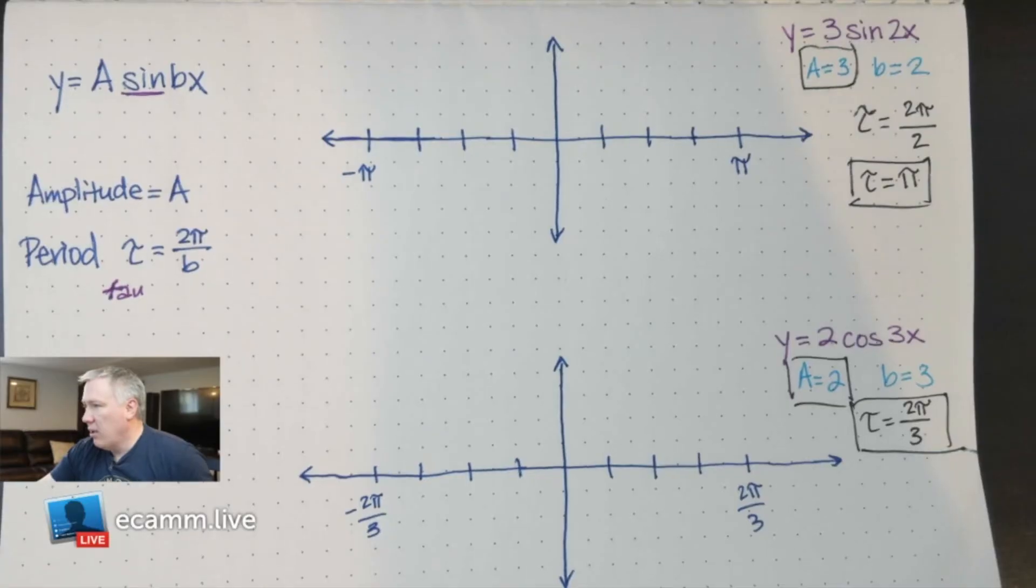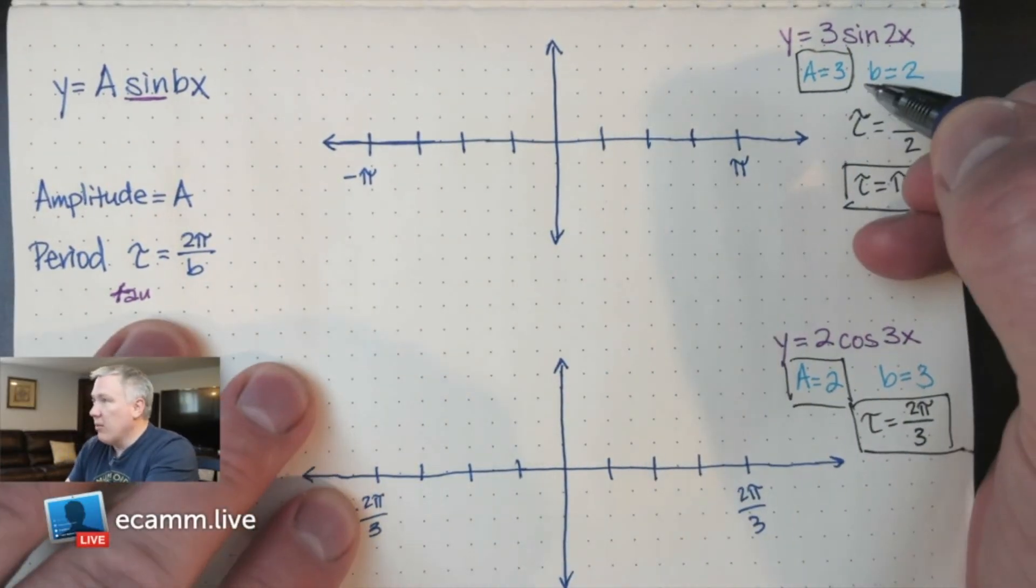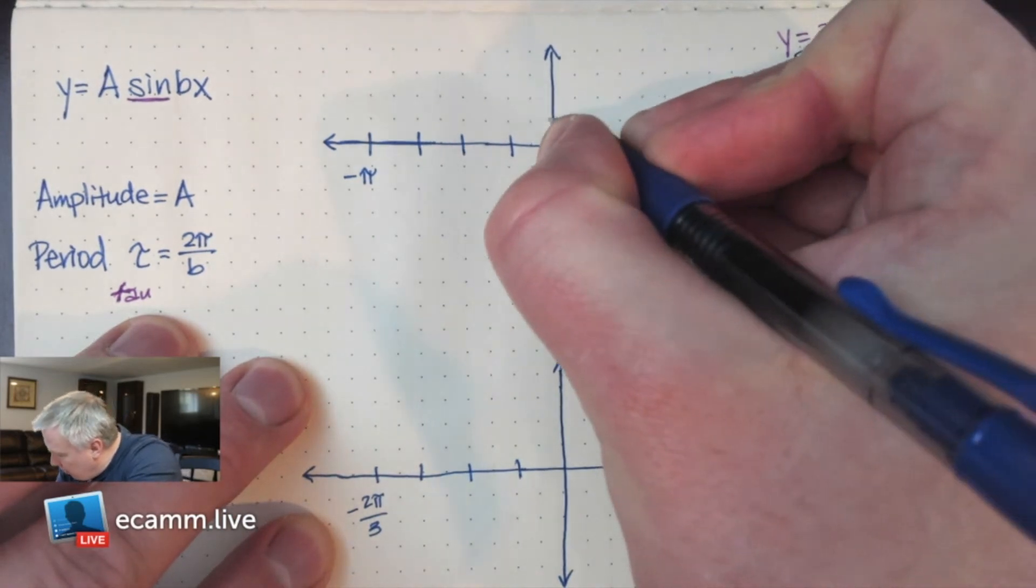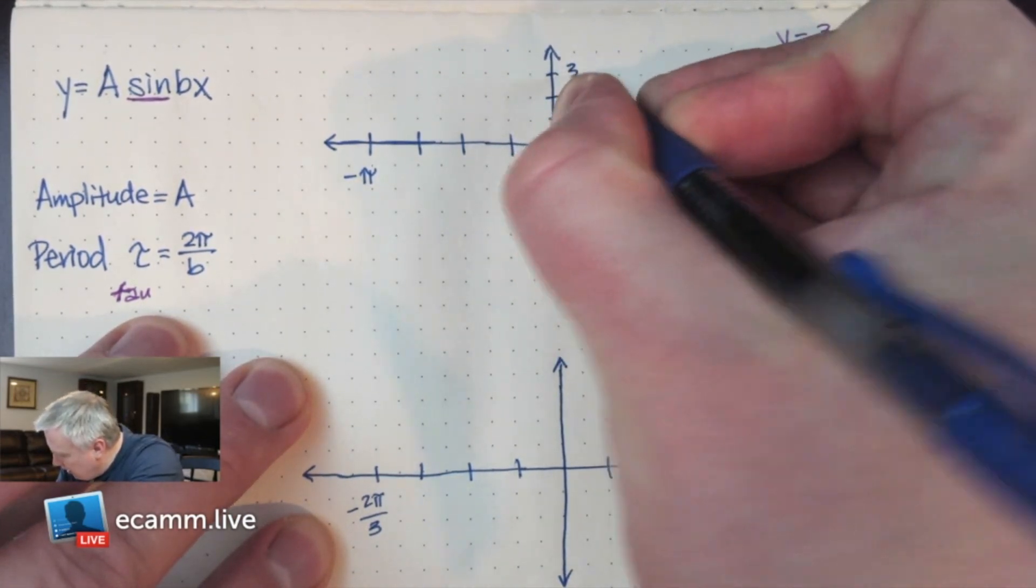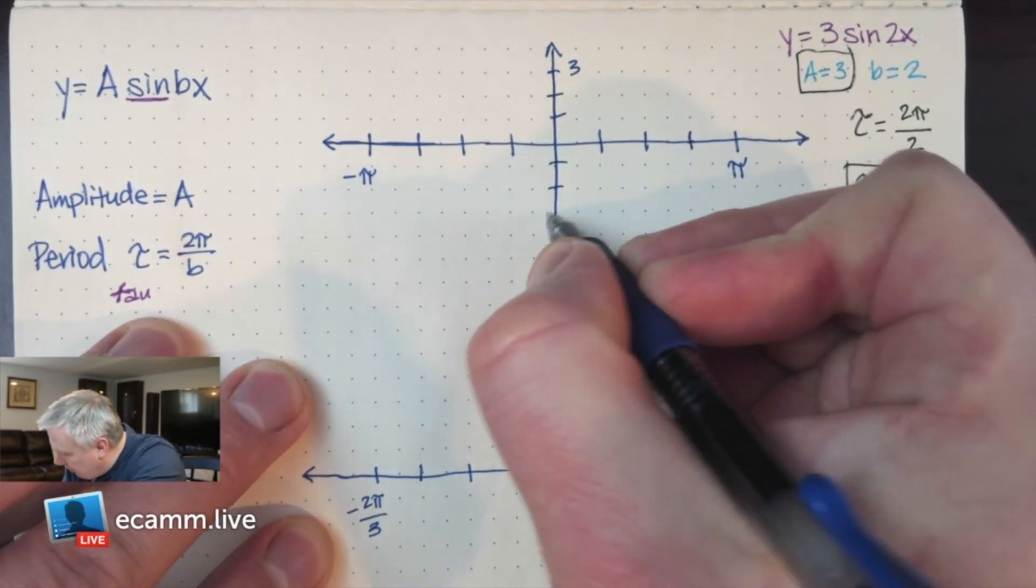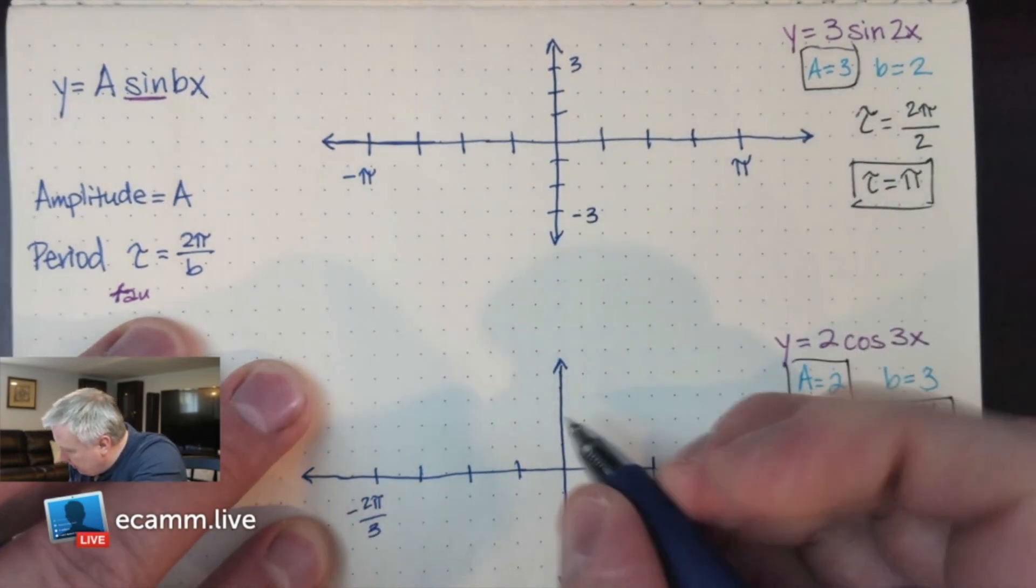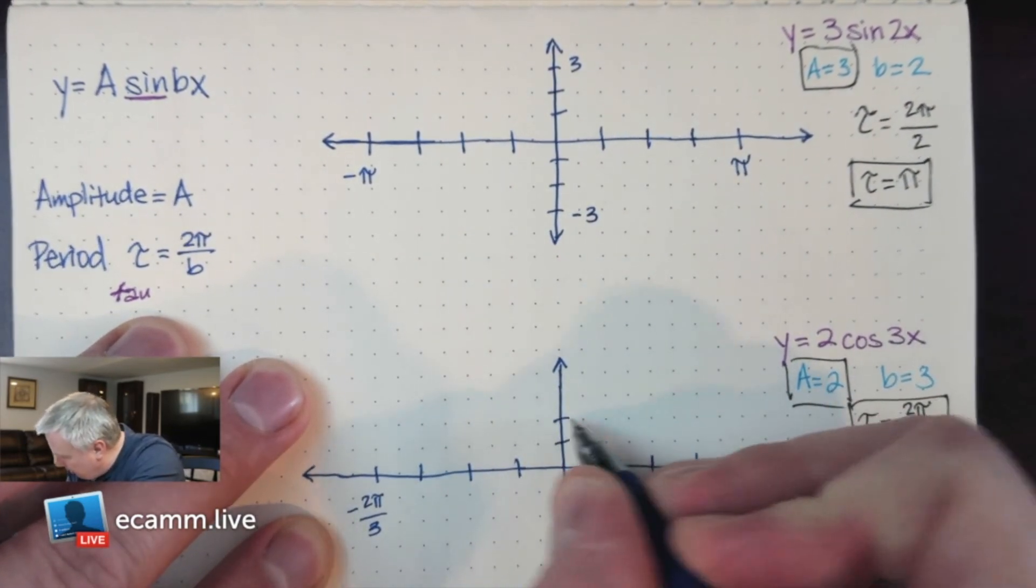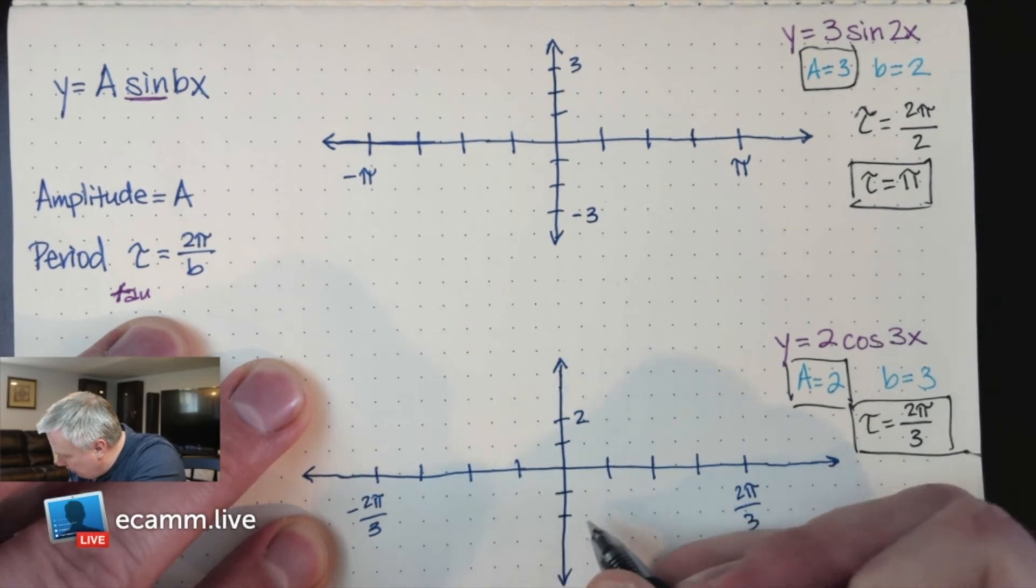Let's go back here. My amplitude here was 3, so I'm going to go up 1, 2, 3, and down 1, 2, 3. And here my amplitude is 2, so I'm going to go up 1, 2, and down 1, 2.